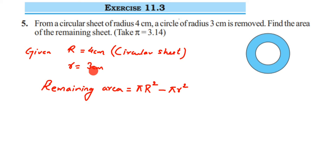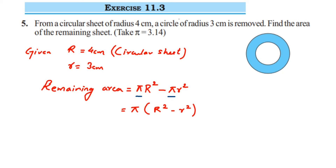Instead of substituting the pi value and each radius separately, I'm going to factor out pi, since it's common in both terms. So remaining area = π(R² − r²). When you expand the bracket, π times R² minus π times r² gives us back the same expression. This makes the calculation much easier. If you prefer, you can substitute values directly into each term and then subtract.